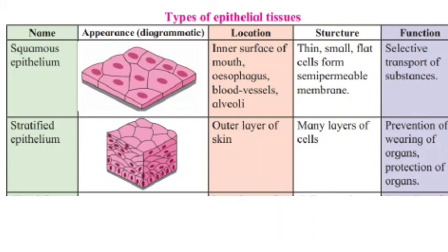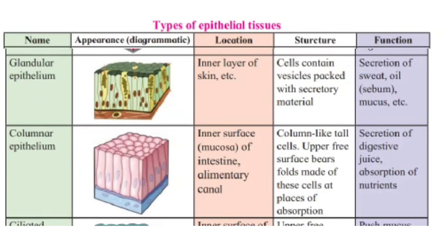Next is stratified epithelium tissue, found in the outer layer of your skin. It has many layers of cells, and its function is prevention of wear and protection of organs. Next is granular epithelium. Its location is in a layer of our skin. Its structure consists of cells containing vesicles packed with secretory materials. Its function is secretion of sweat, oil (sebum), and mucus. Sweat removes extra salt and water to keep your skin temperature low.